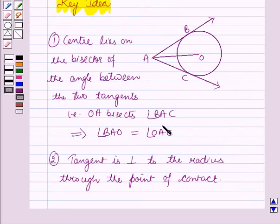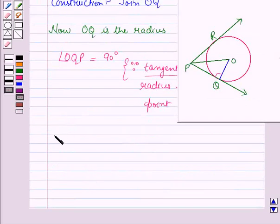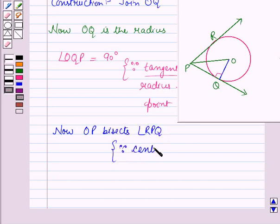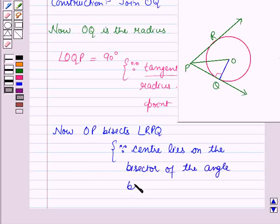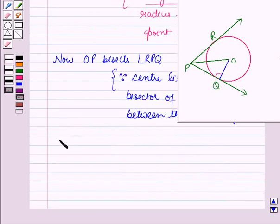Now using the first result which is given in the key idea, OP bisects angle RPQ because center lies on the bisector of the angle between the two tangents. So this implies angle RPO is equal to angle OPQ.